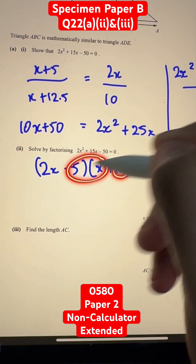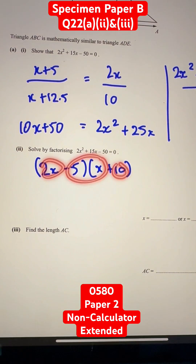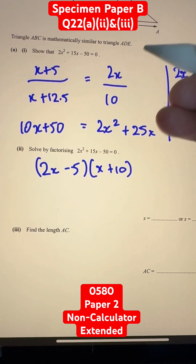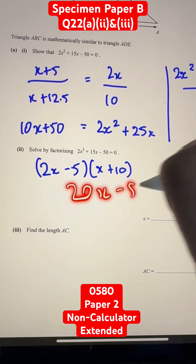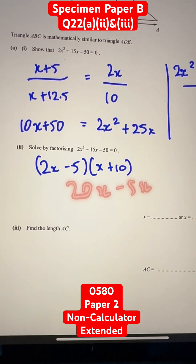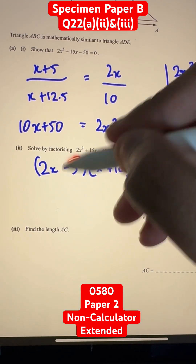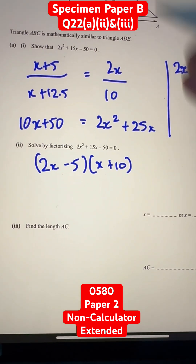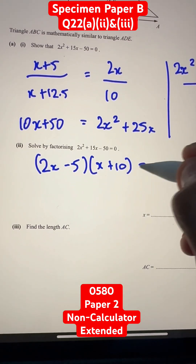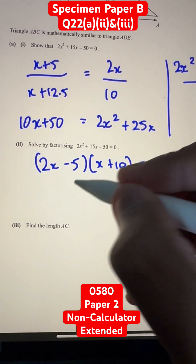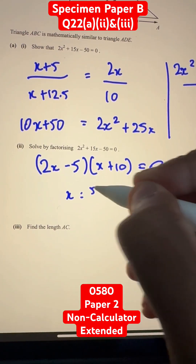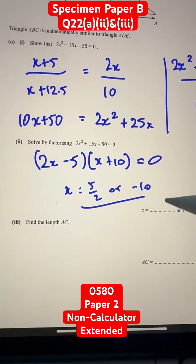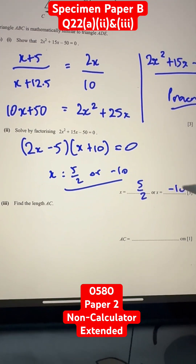If you expand it out, we'll see that the outside multiplied and the inside multiplied give us 20x minus 5x, which is 15x — correct. And negative 5 times 10 is negative 50, which is also correct. So when this is equal to 0, we can solve for x. Therefore, x is equal to 5 over 2, or x is equal to negative 10.